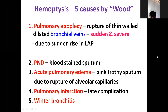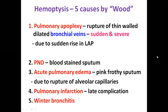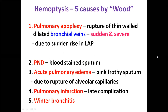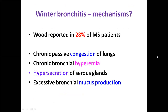Hemoptysis in mitral stenosis has five causes. The most important is pulmonary apoplexy — rupture of thin-walled dilated bronchial veins due to sudden rise in LA pressure, causing sudden and severe hemoptysis. The bronchial veins join the pulmonary veins, and whenever LA pressure increases, bronchial vein pressure also increases, potentially causing rupture. Other causes include blood-stained sputum during acute pulmonary edema with pink frothy sputum, rupture of alveolar capillaries, pulmonary infarction — a late complication — and winter bronchitis.